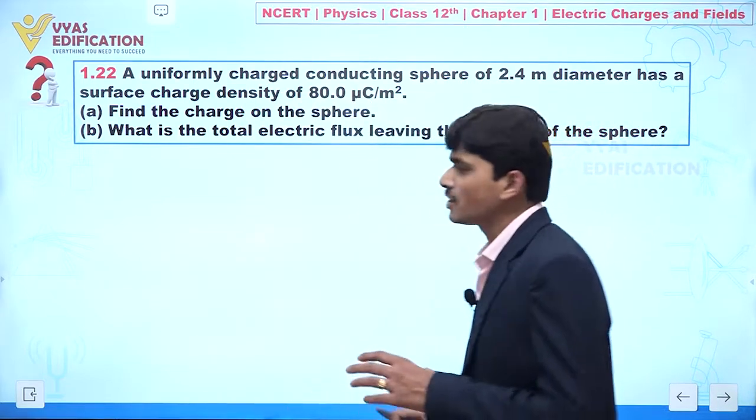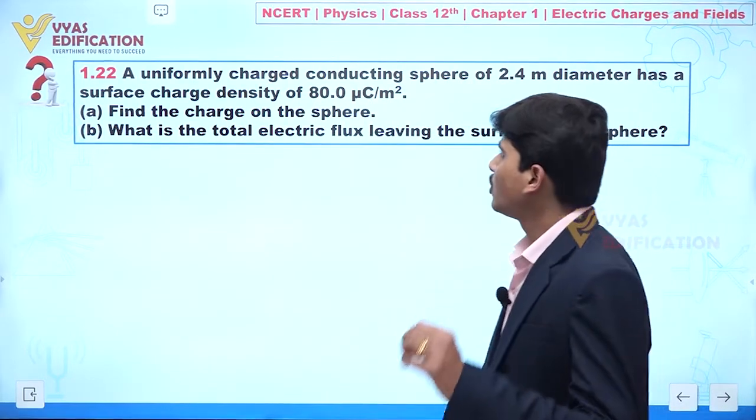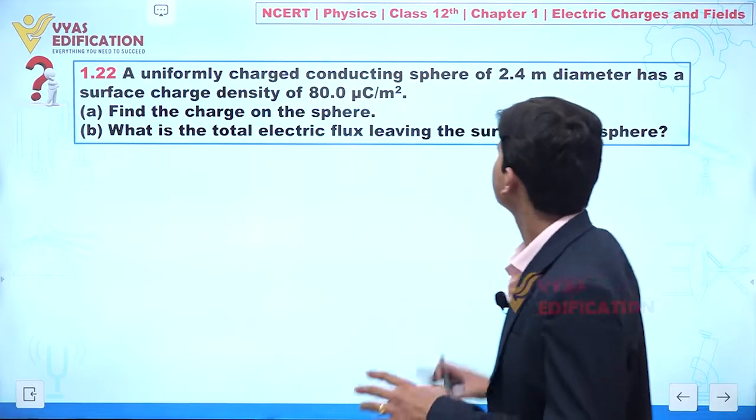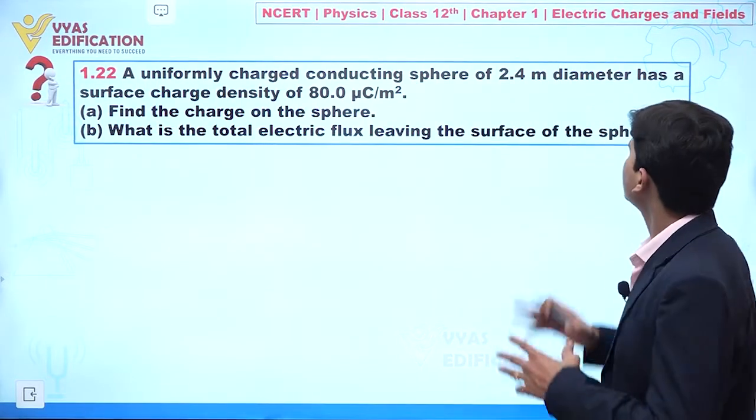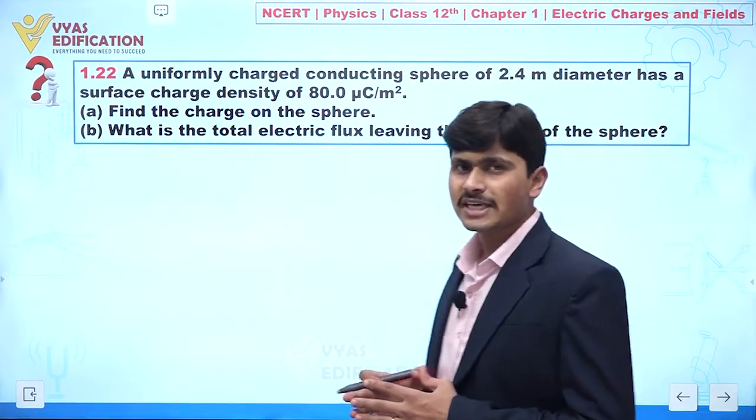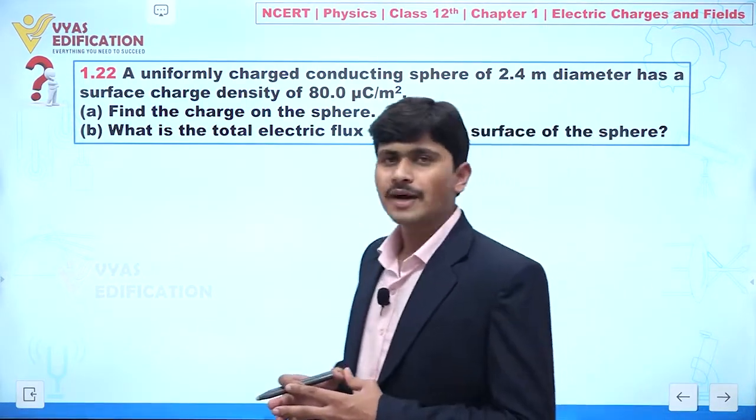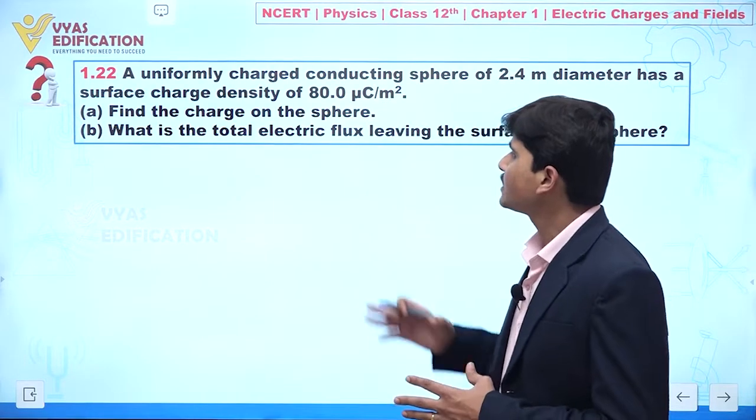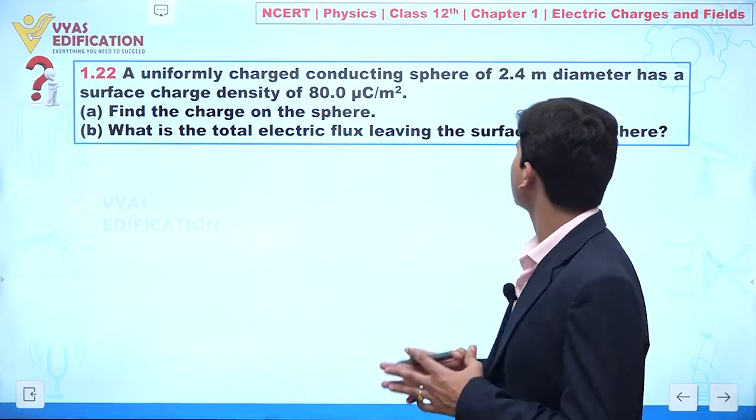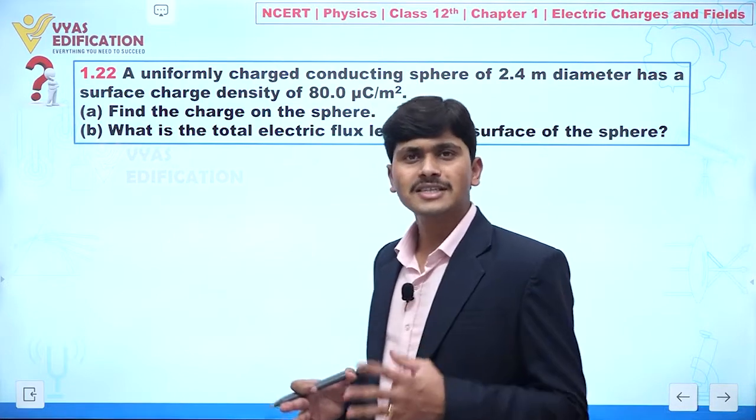Now dear student we are going to discuss question number 1.22. A uniformly charged conducting sphere of 2.4 meter diameter has a surface charge density of 80 micro coulombs per meter square. Number A, find charge on the sphere. Second, what is total electric flux leaving surface of the sphere?